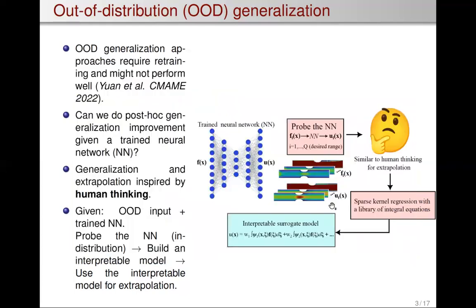This is exactly what we want to do with neural networks. Given a neural network that's already trained and an input that's out of distribution, we probe the neural network inside the training landscape by giving it dozens or hundreds of input functions within the training landscape and quickly obtain outputs. We then have pairs of inputs and outputs, and we fit an interpretable model to that data using sparse kernel regression. The result is an interpretable surrogate model — a sum of integral equations — which we then use to answer the new out-of-distribution input.